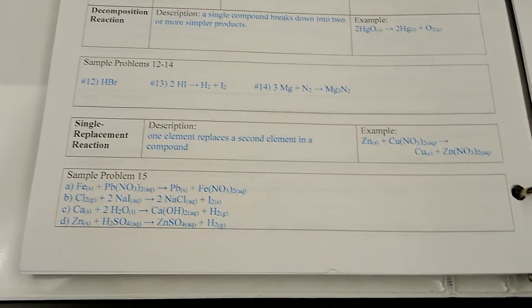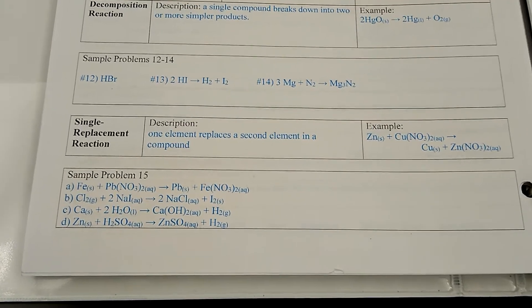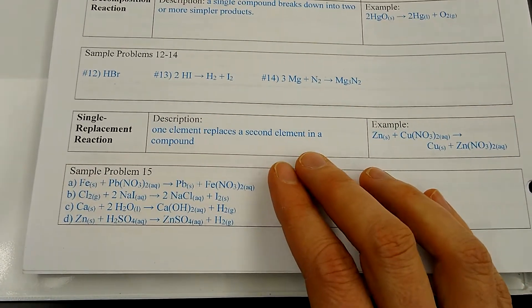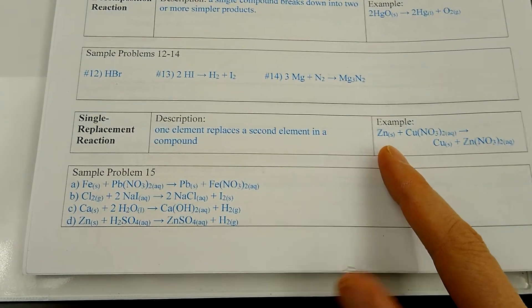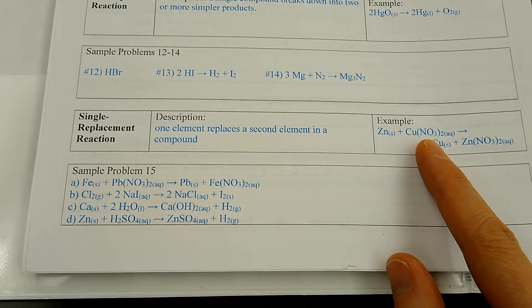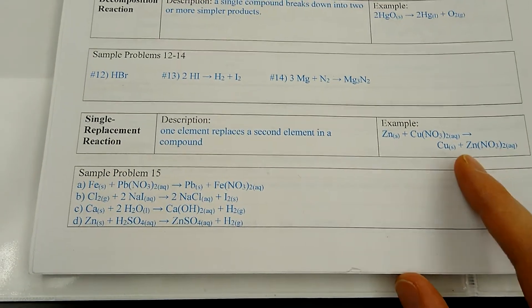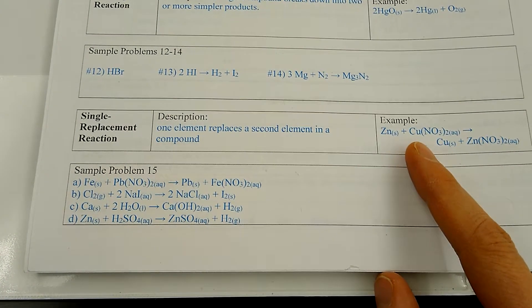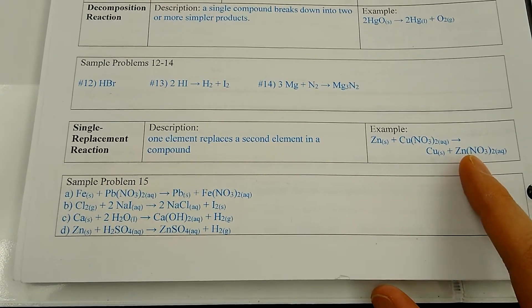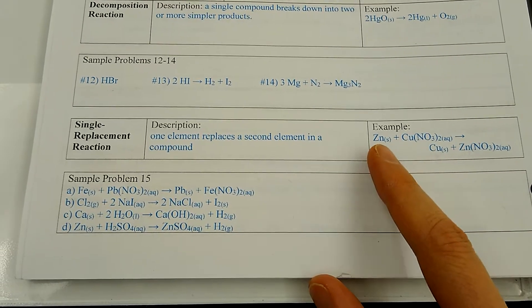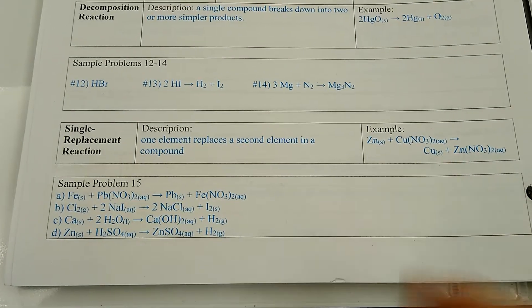Our next type of reaction is a single replacement reaction, sometimes called single displacement — same thing. One element replaces a second element in a compound. Here zinc is a single element by itself and copper nitrate is a compound. On the other side of the arrow, we have copper by itself and zinc nitrate as a compound. Zinc stole copper's partner. You can think of it as a single guy who cuts in on a couple and steals the girl.